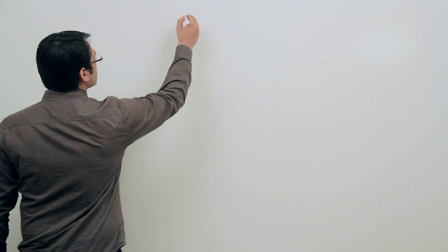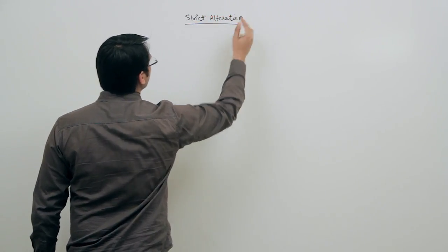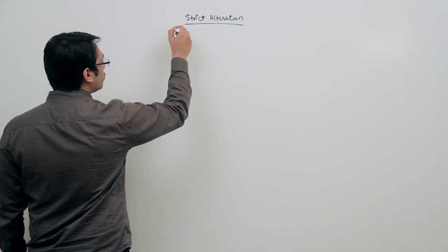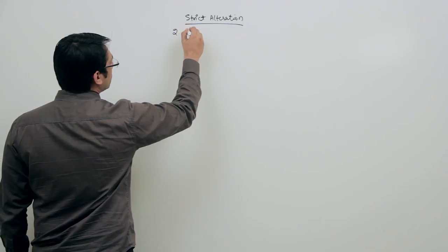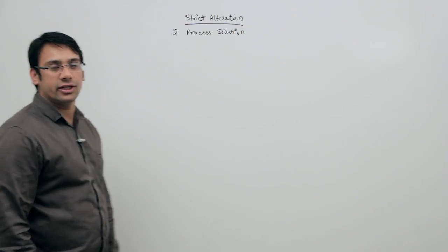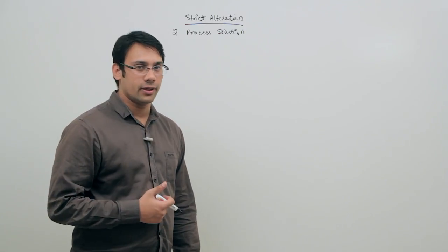Now let us look at the next mechanism, which is related to strict alternation. Till now we have already seen the mechanisms where we used the lock variable and the test-and-set instruction. Now we are going to see a new mechanism which is related to strict alternation. This is only a two-process solution — it cannot work for more than two processes.